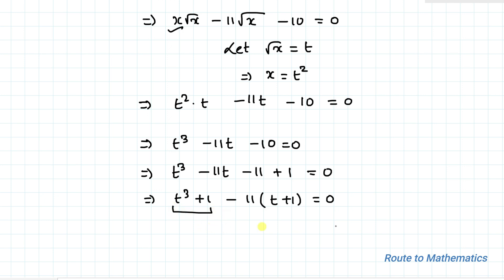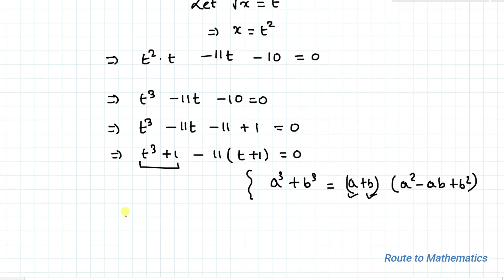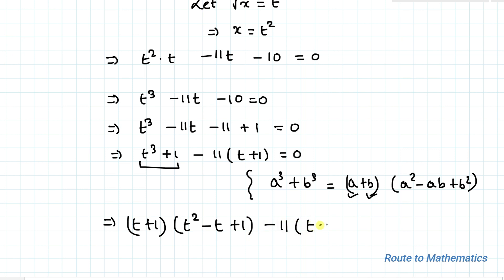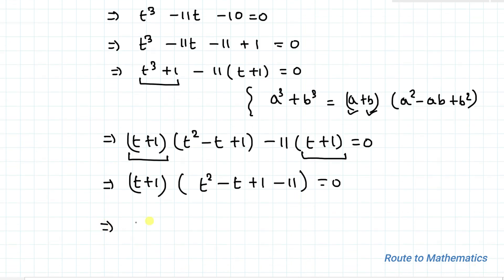Here we have t³ + 1, so I'll apply the algebraic identity a³ + b³ equals (a + b)(a² − ab + b²), assuming a = t and b = 1. Taking (t + 1) as a common factor gives (t + 1) multiplied by (t² − t + 1 − 11) equals 0, which simplifies to (t + 1)(t² − t − 10) equals 0.